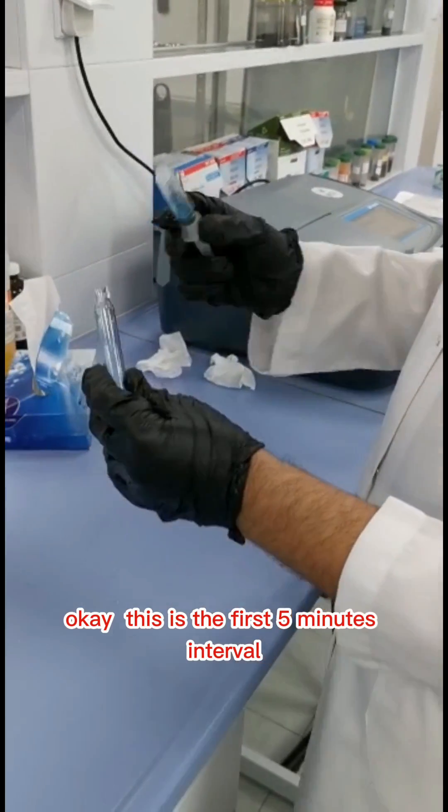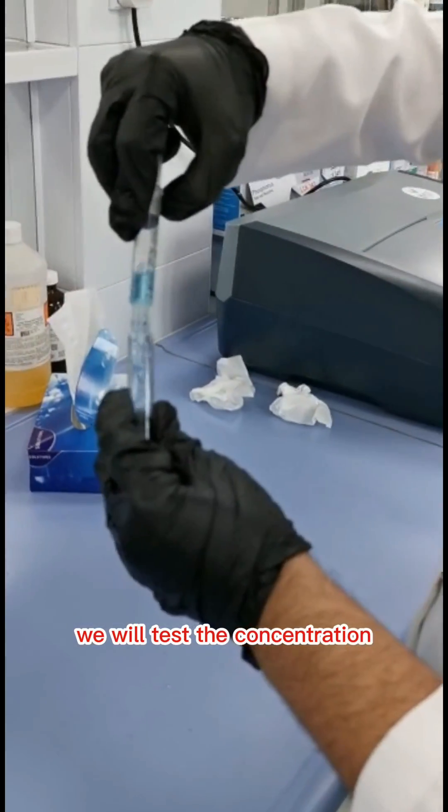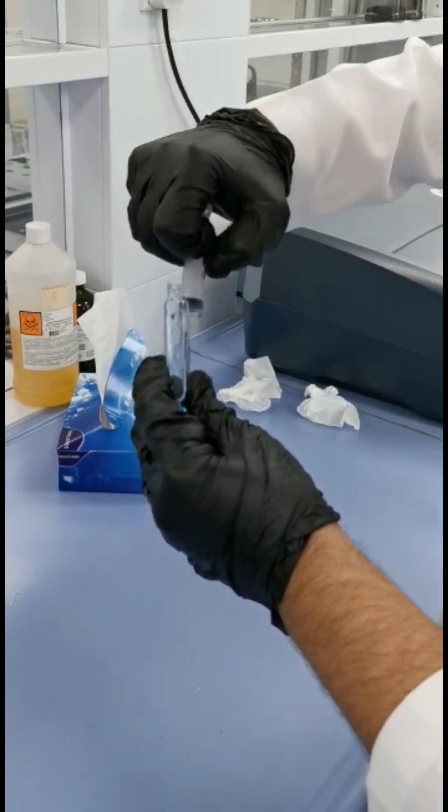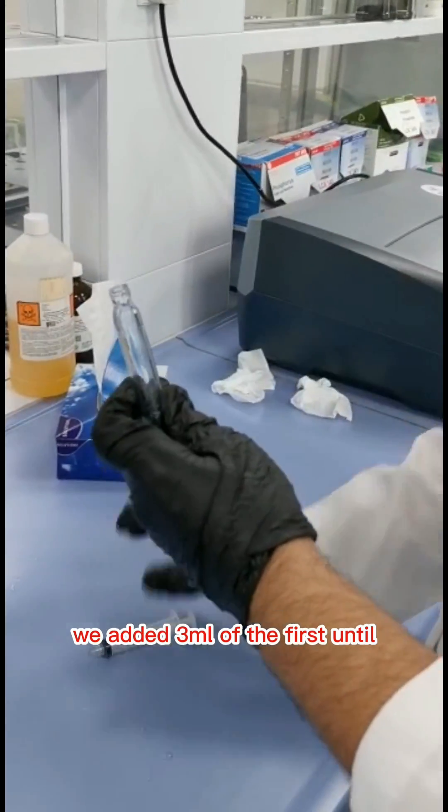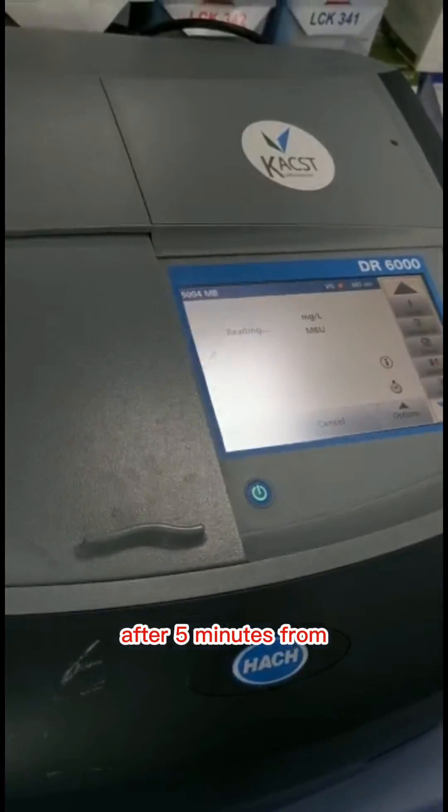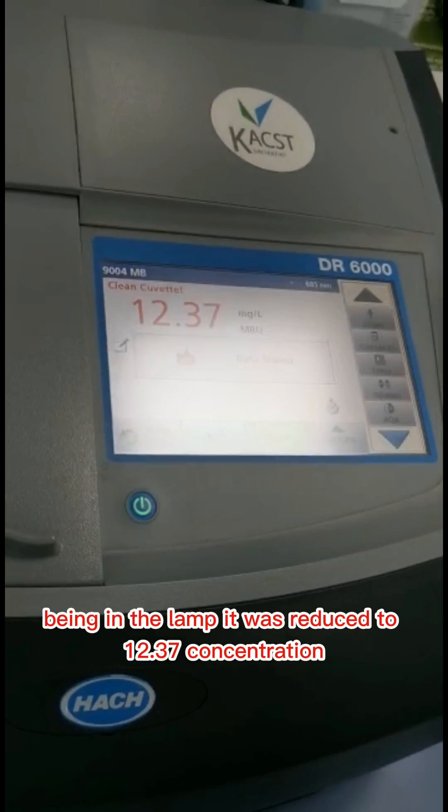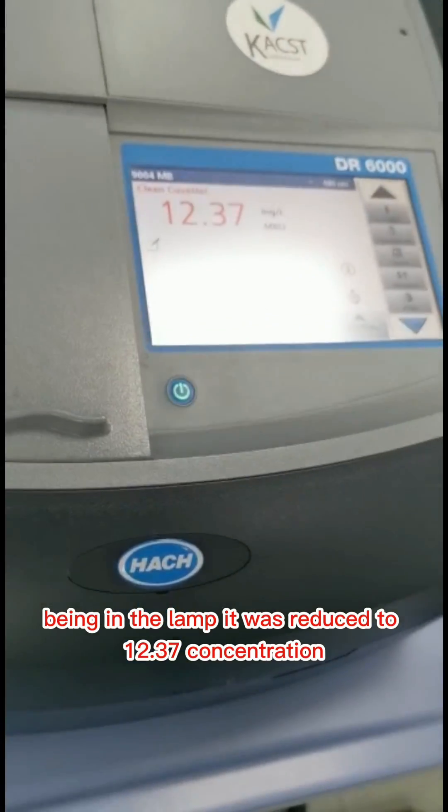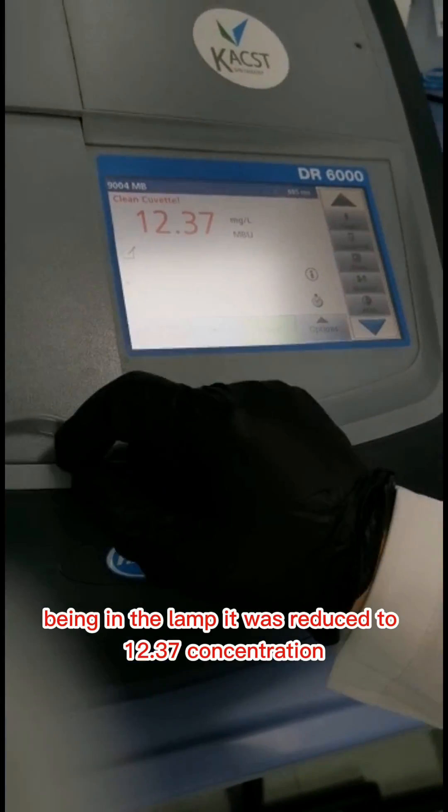This is the first 5 minute interval. We will test the concentration. We added 3 ml of the first interval after 5 minutes of being under the lamp. It was reduced to 12.37 ppm concentration.